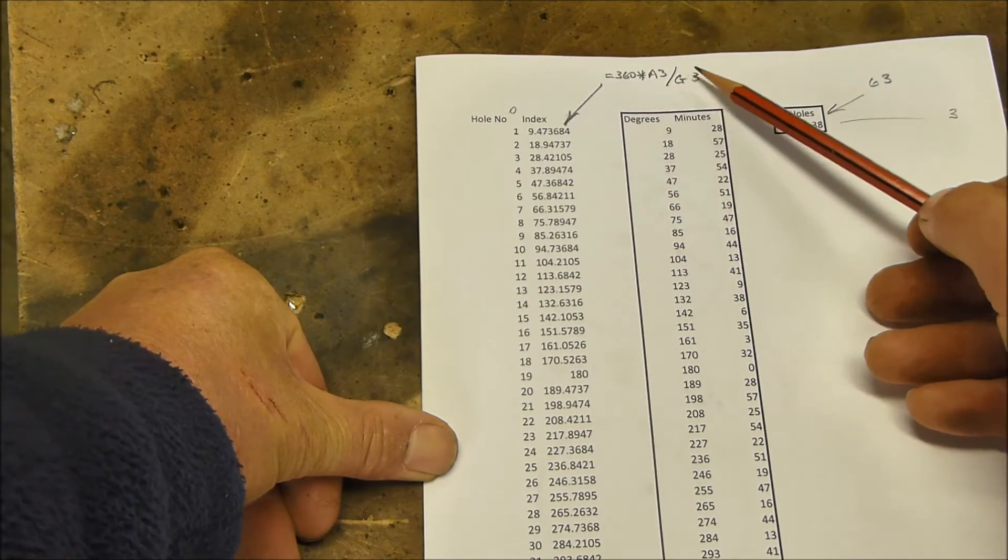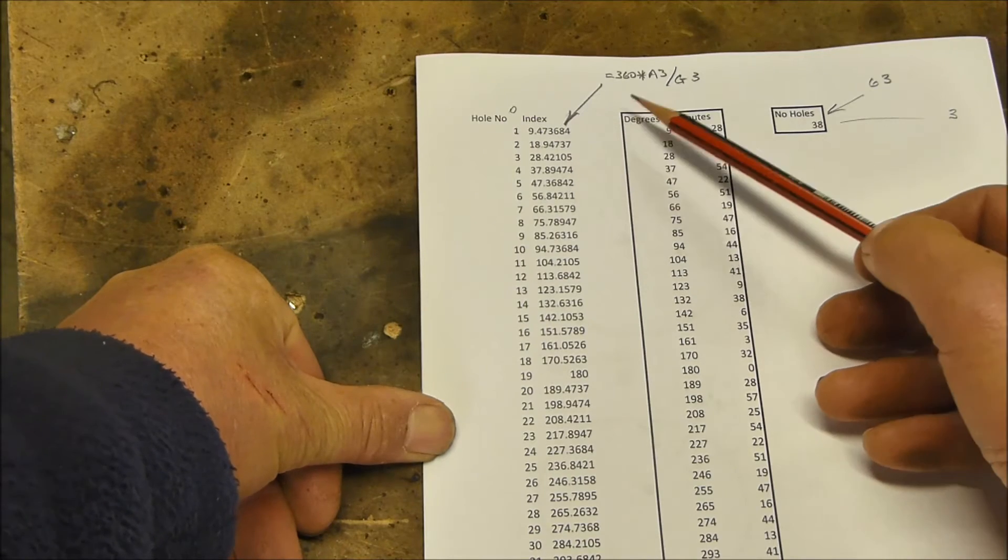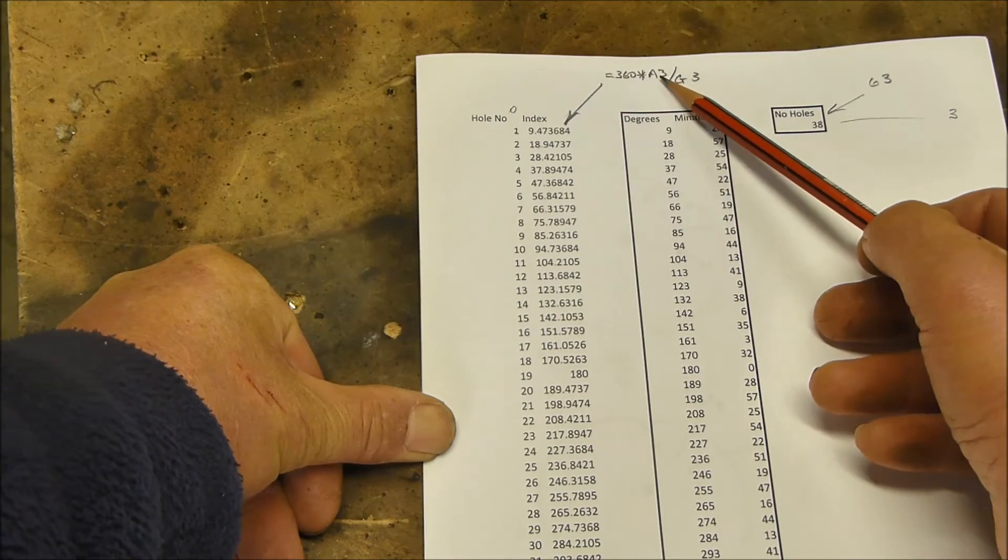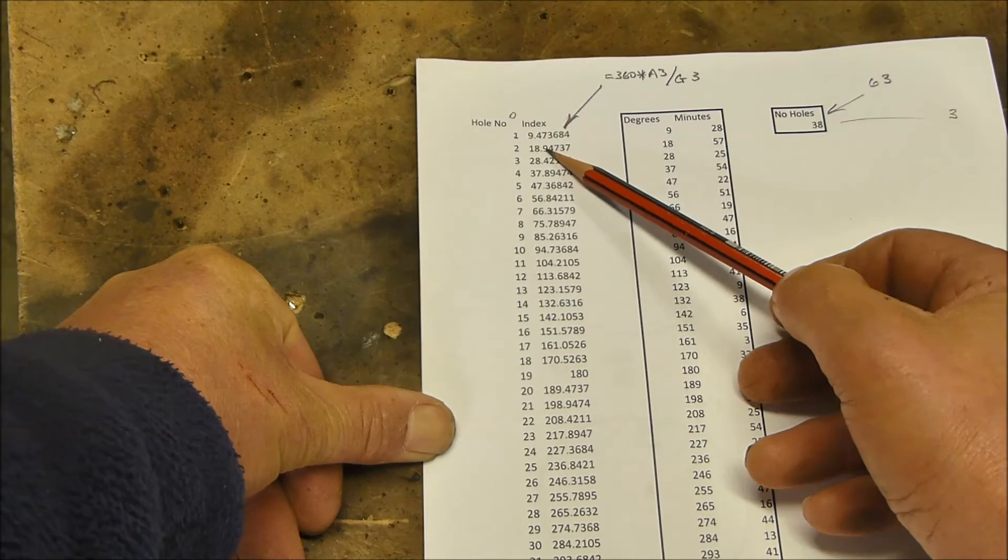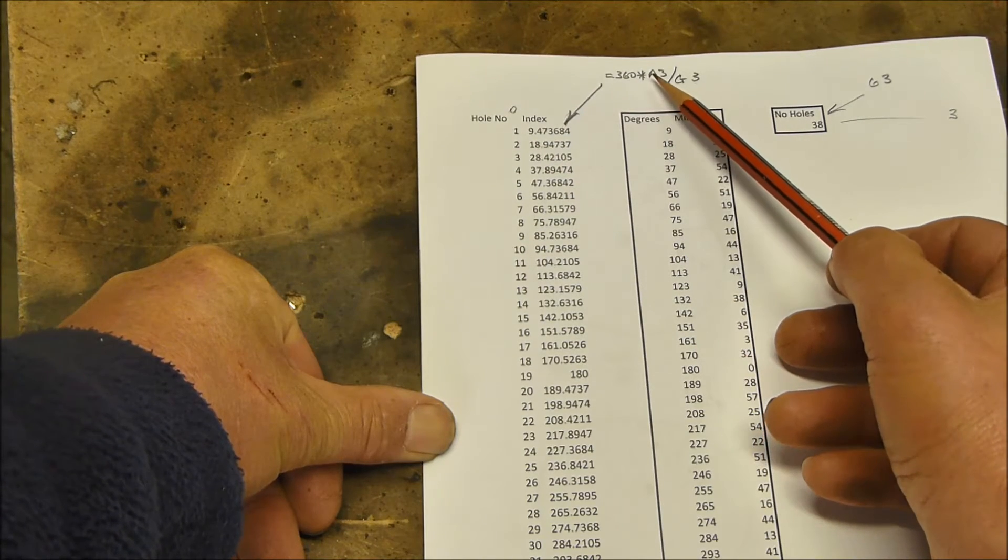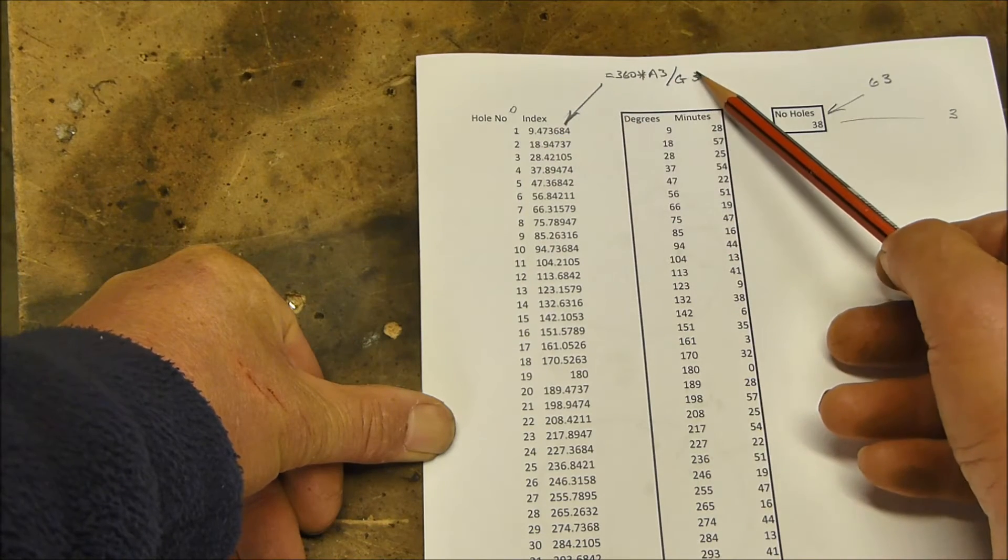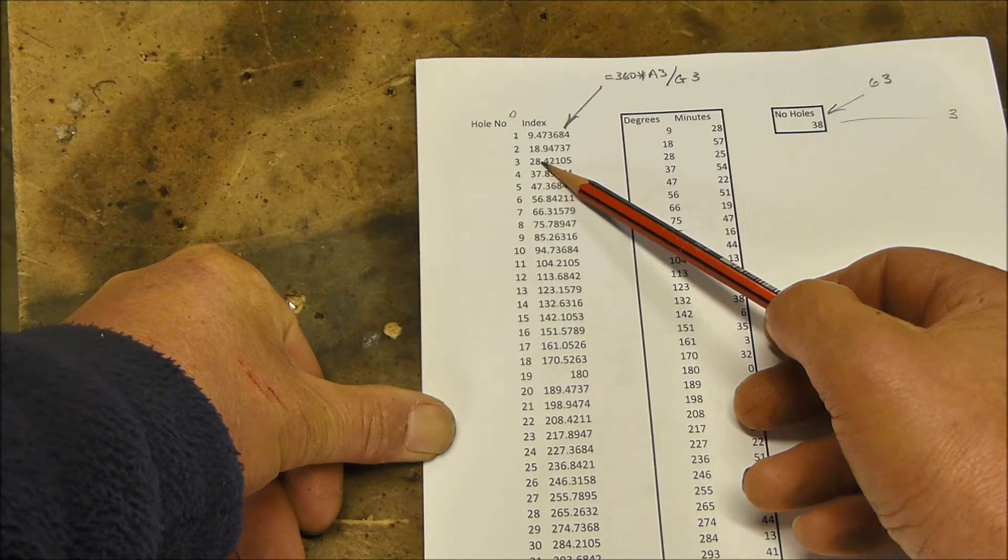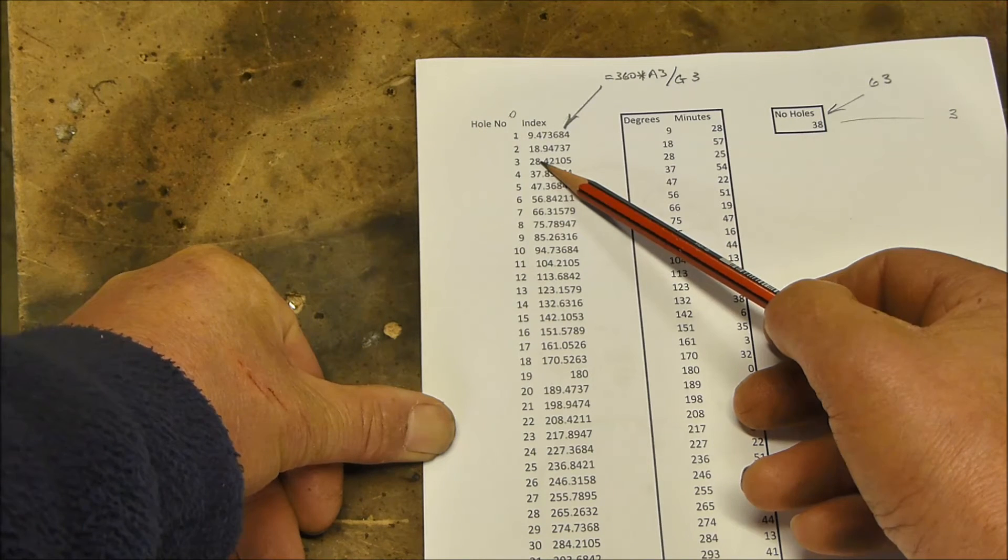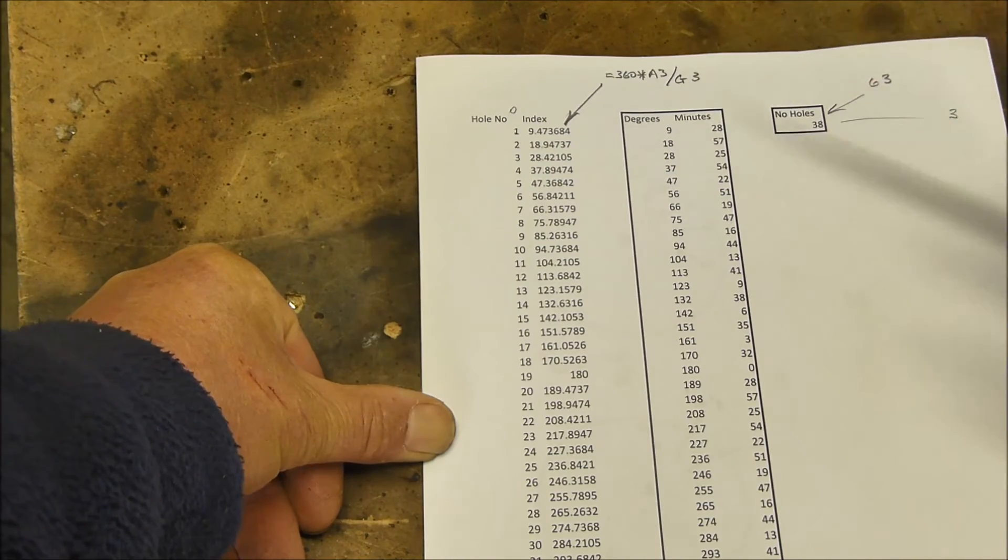Now if we copy that formula into the next cell down, Excel is very clever and it will advance these numbers depending on where it is. So in this formula, in this cell here, we would put 360 times A4, which is that number, divided by G3, and the next row down, it would give us 360 times A5, divided by 38, et cetera.